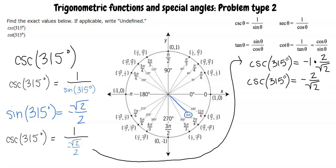But we are not done yet. We still need to rationalize the denominator. To do this, we multiply by the fraction square root 2 over square root 2. This simplifies to negative 2 square root 2 over 2.